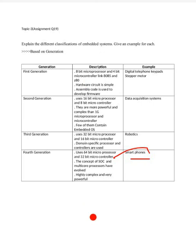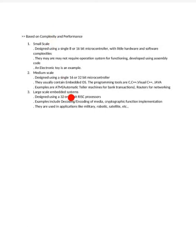This is the classification based on generation. When asked for 10 marks, you should also give the second classification, which is based on complexity and performance. Embedded systems are classified into small scale, medium scale, and large scale embedded systems. This classification is again based on whether the microcontroller or microprocessor is 8-bit, 16-bit, or 32-bit.